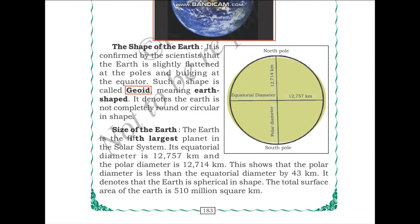The Earth is the fifth largest planet in the solar system. Its equatorial diameter is 12,757 kilometers and its polar diameter is 12,714 kilometers. The polar diameter is less than the equatorial diameter by 43 kilometers, which confirms the Earth is spherical in shape. The total surface area of the Earth is 510 million square kilometers.